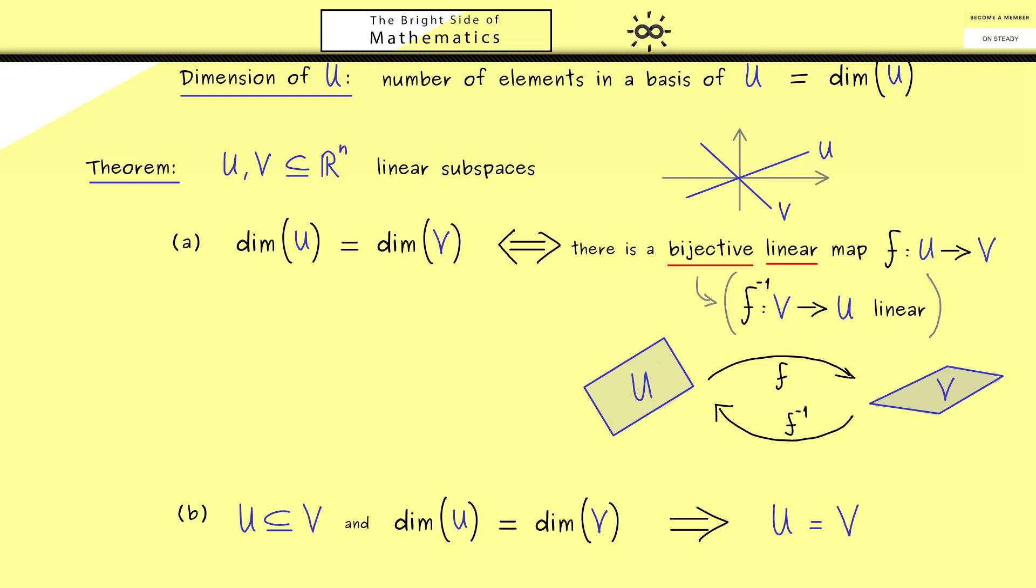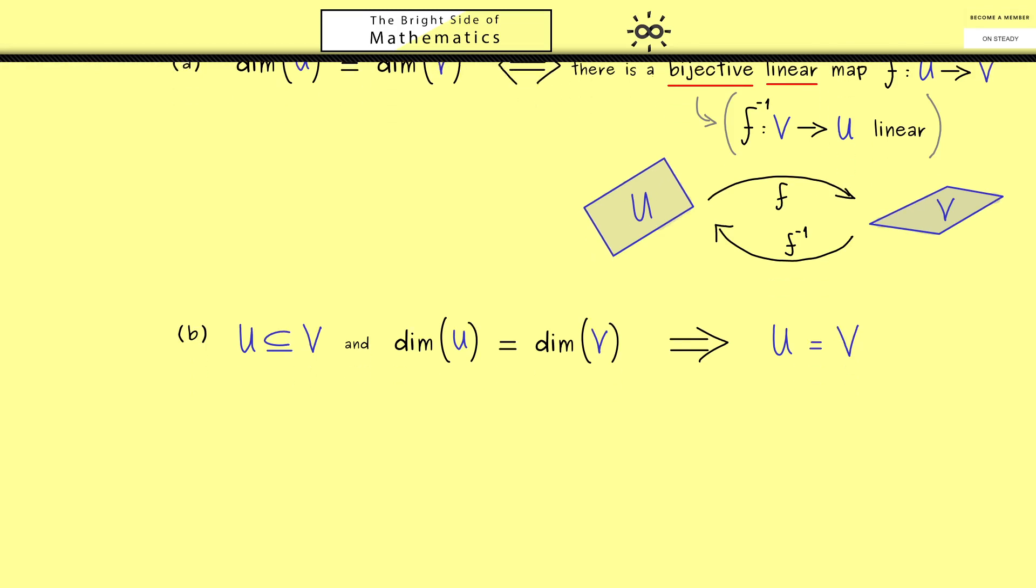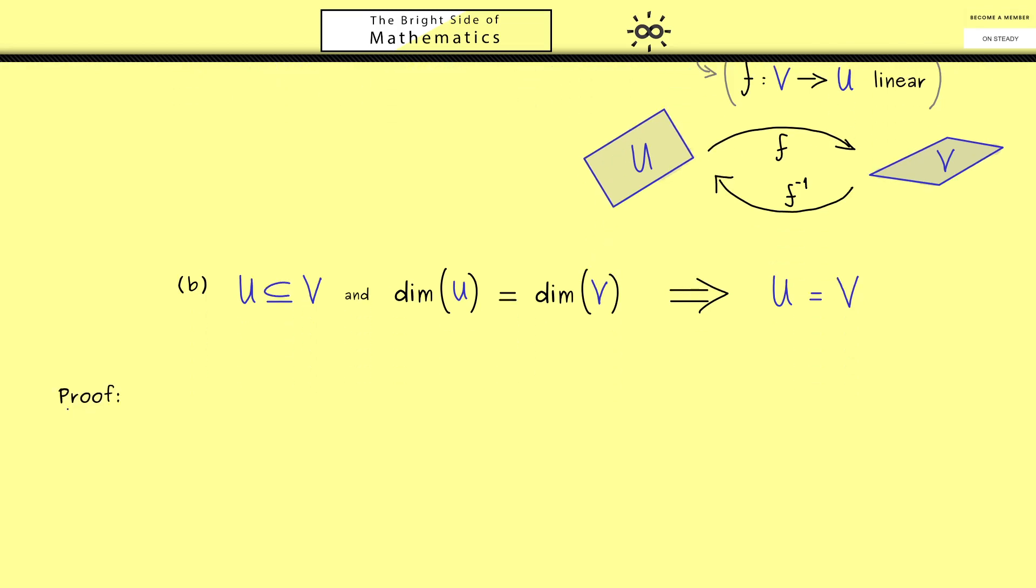Moreover in order to understand these claims here I would say let's prove them. So let's start writing down the proof for part A. More precisely we will start with the direction with the implication from left to right. Hence what we put in what we assume is that both subspaces have the same dimension. Hence when we now write down a basis B of U and a basis C of V then we know they have the same number of elements. So let's simply say the numbers of vectors here is given by the integer k.